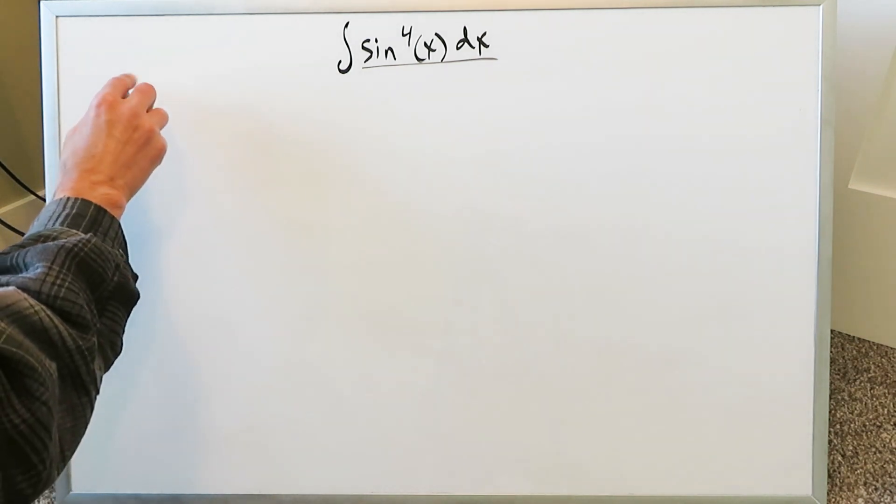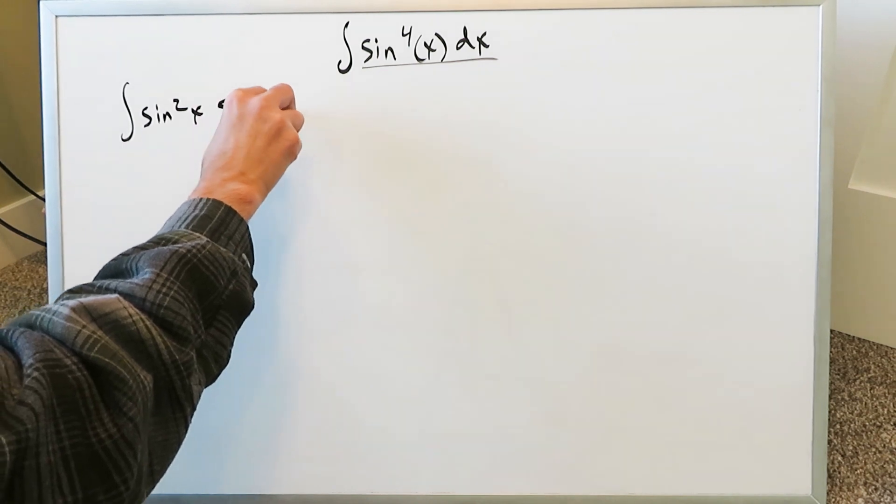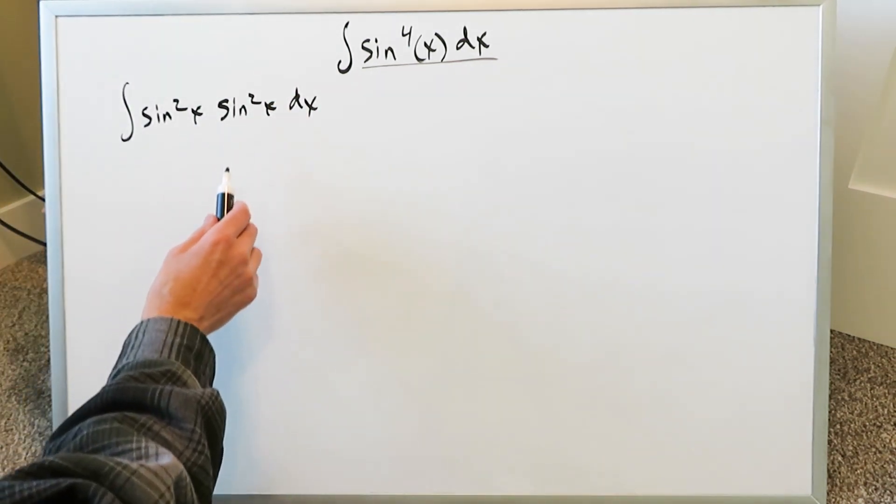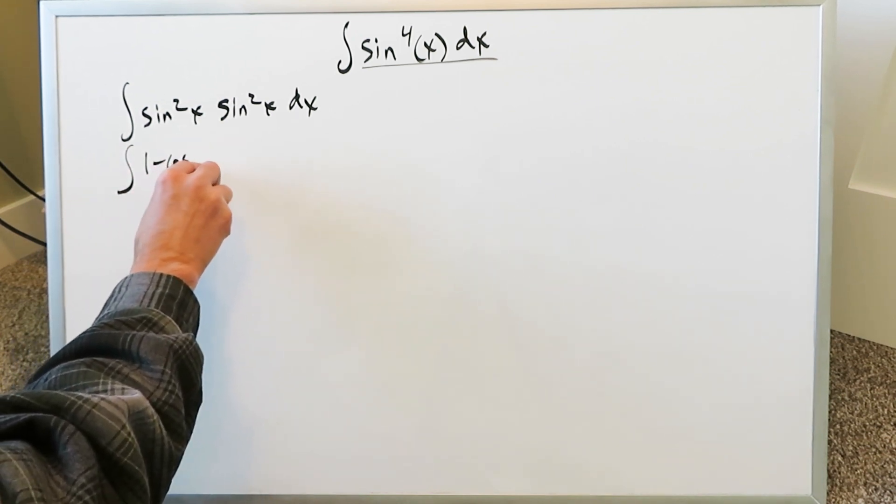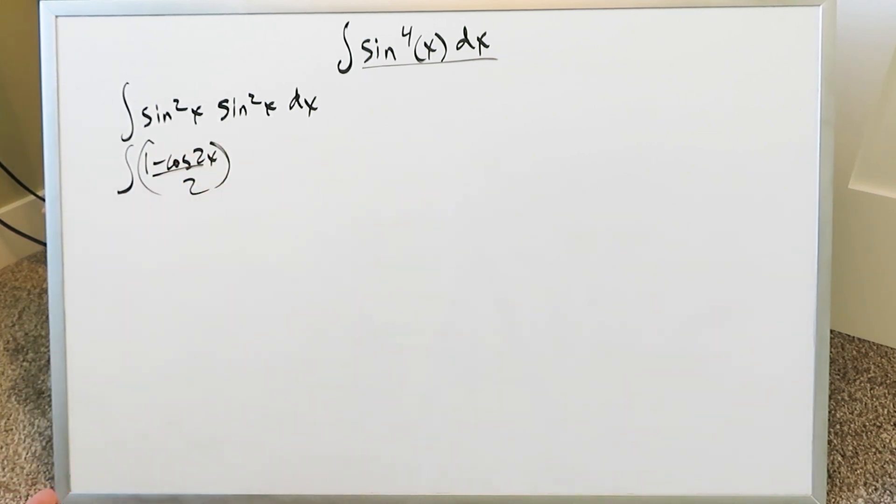I would proceed with separating this into their individual sine square x components and I would proceed from right there. It doesn't look too hard from here at this point onwards. You can do the power reducing identity. We know sine square x is equal to 1 minus cosine 2x over 2 and we have two of these so we have to multiply them together.